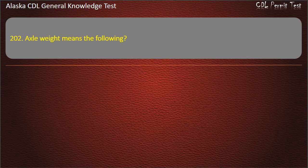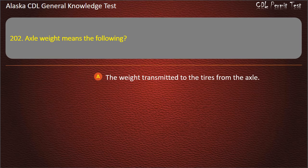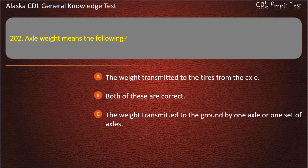Question 202. Axle weight means the weight transmitted to the tires from the axle, both of these are correct, or the weight transmitted to the ground by one axle or one set of axles. Answer: The weight transmitted to the ground by one axle or one set of axles.